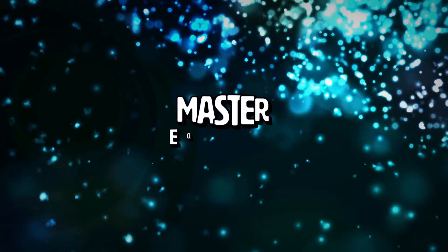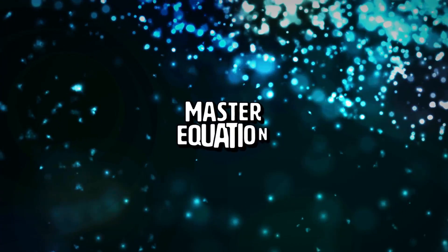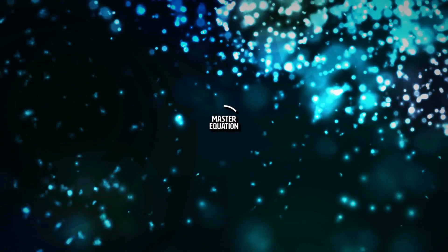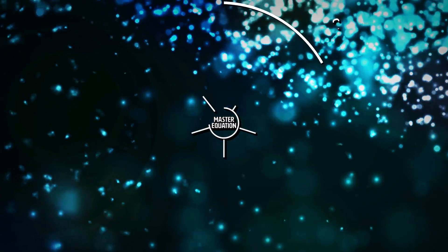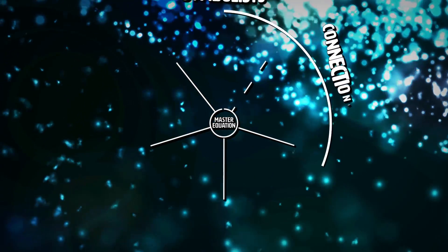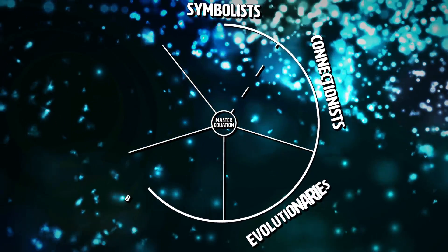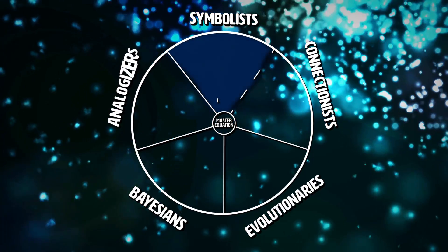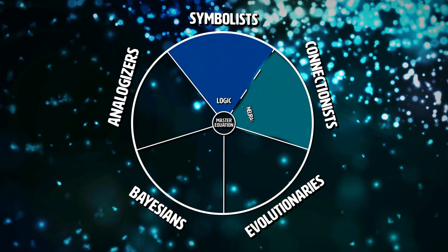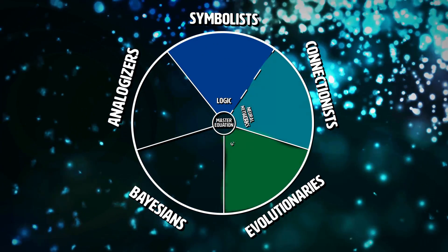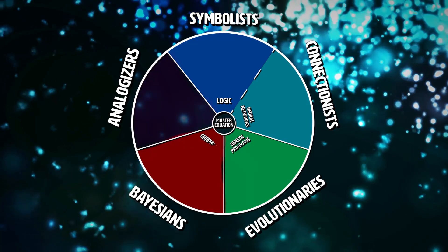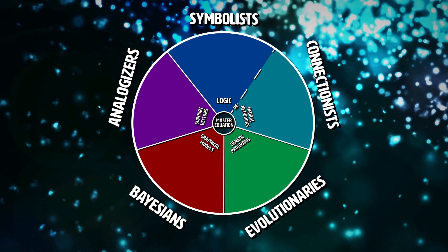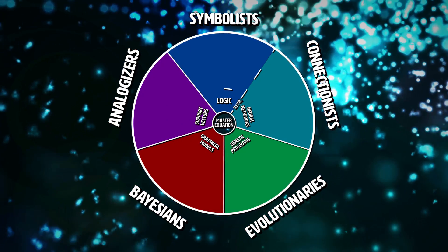What I liked most about this book was the conceptual model created of the field. The author categorized different areas of thought in machine learning into their own respective tribes: the symbolists, the connectionists, the evolutionaries, the Bayesians, and the analogizers. Each have their own perspective on what the best, most generalized, smartest algorithm is.